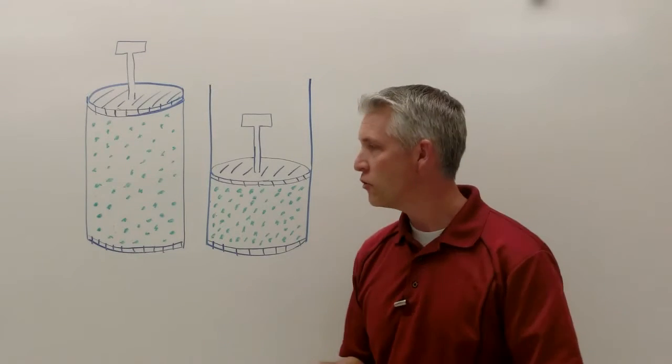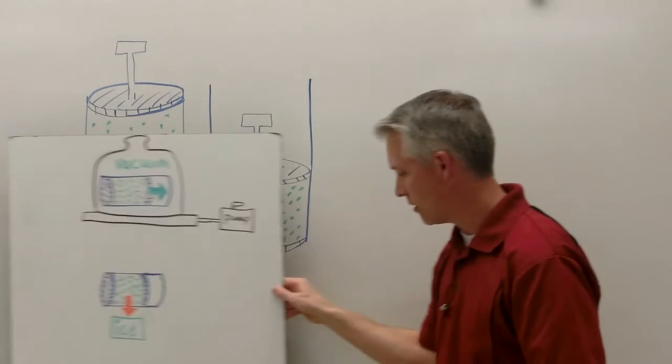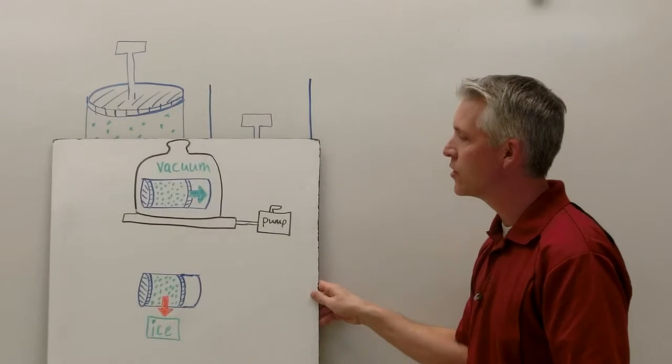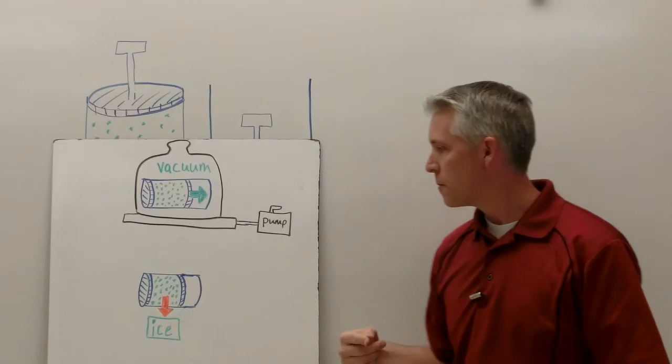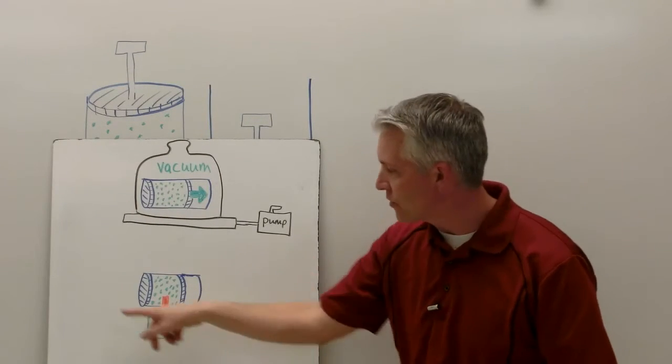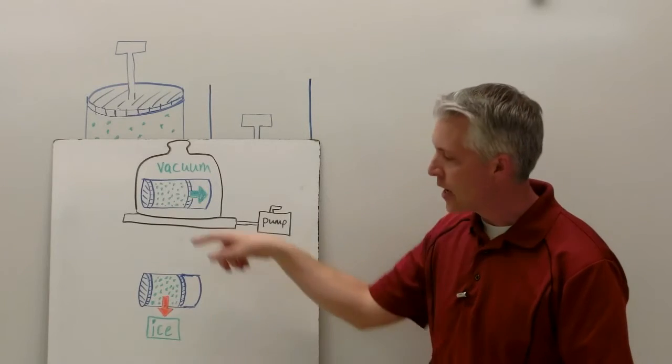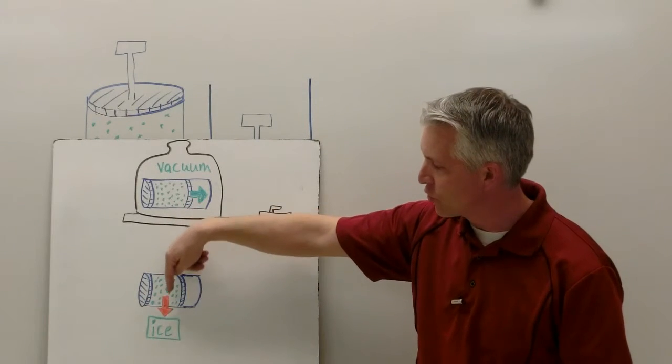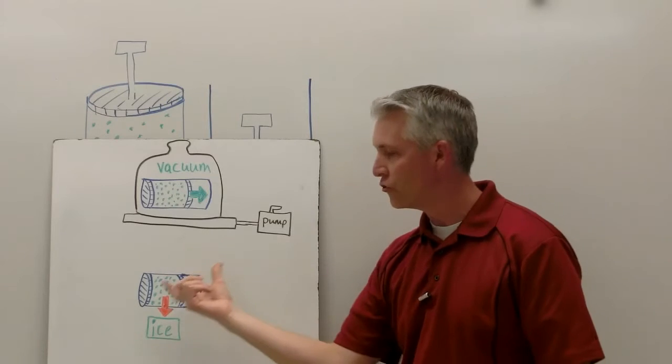Now I can also do the opposite. I can cool something down using these same two ideas. I can put ice around this air cylinder and energy flows from the warmer air to the cooler ice and it cools down the air, loses thermal energy.